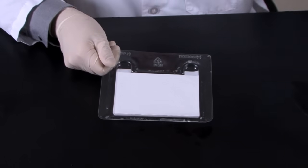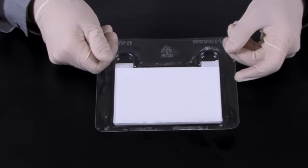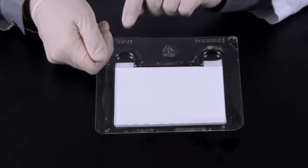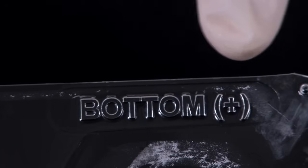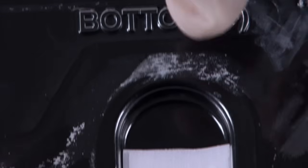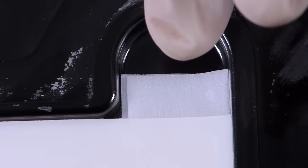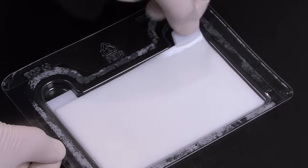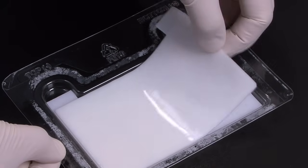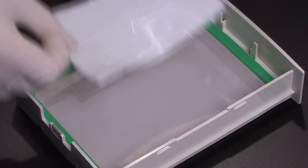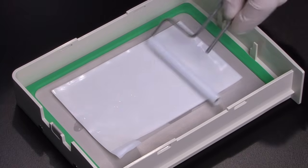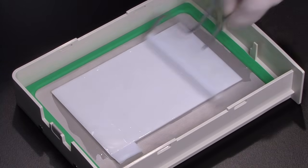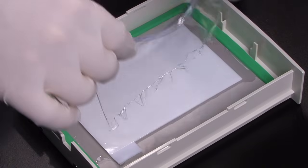Trans-blot turbo transfer packs also come in the larger MIDI size. In the MIDI transfer pack, both the top and bottom ion reservoir stacks are arranged in one tray, one on top of the other, and can easily be separated using the pre-cut tabs on the upper corners. The first or bottom stack, which contains the membrane, is lifted using the right tab and placed in the bottom of the cassette with the membrane facing up. Roll the stack and membrane gently with the blot roller to remove any air trapped between the stack and the cassette.